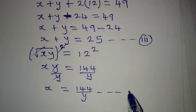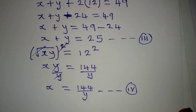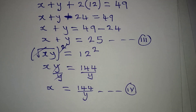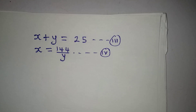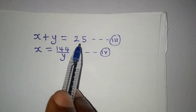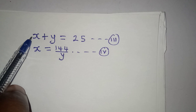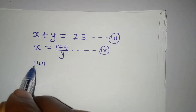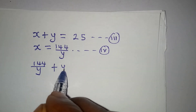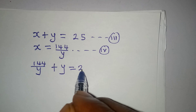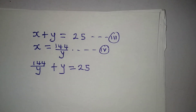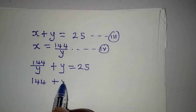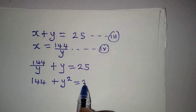Now I'll solve equation 3 and equation 4 simultaneously. In place of x in equation 3, we substitute 144 over y. So we have 144 over y plus y equals 25. Clearing the fraction gives us 144 plus y squared equals 25y.